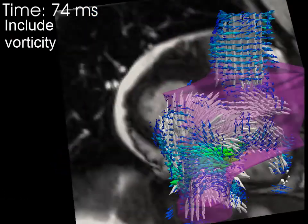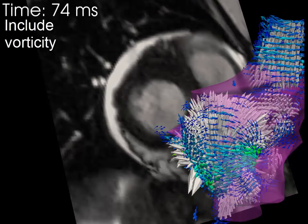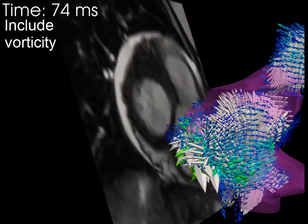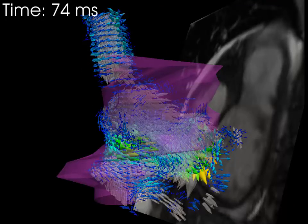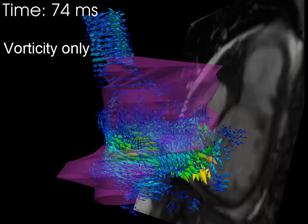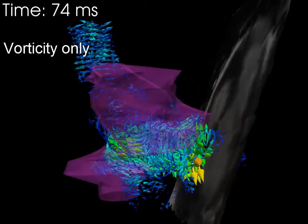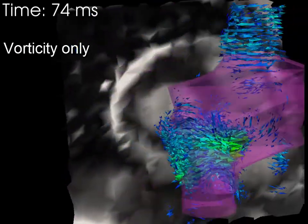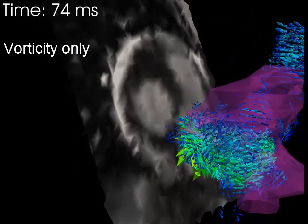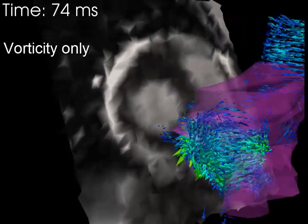The regurgitant jet also contributes significant vorticity during systole as is shown by the colored vectors. The only other significant vorticity at this point in early systole is generated on the walls at the top of the inferior vena cava.